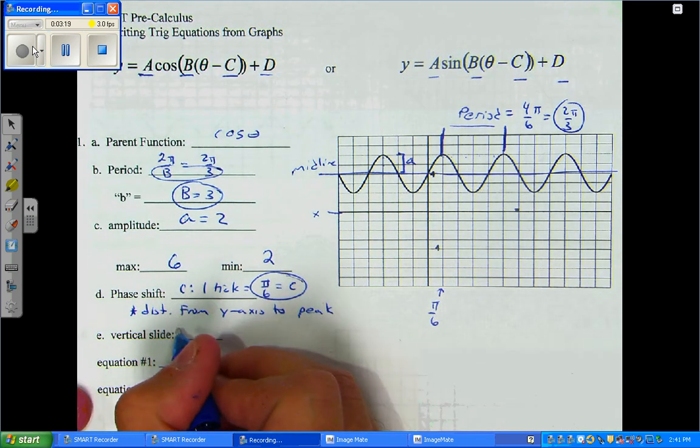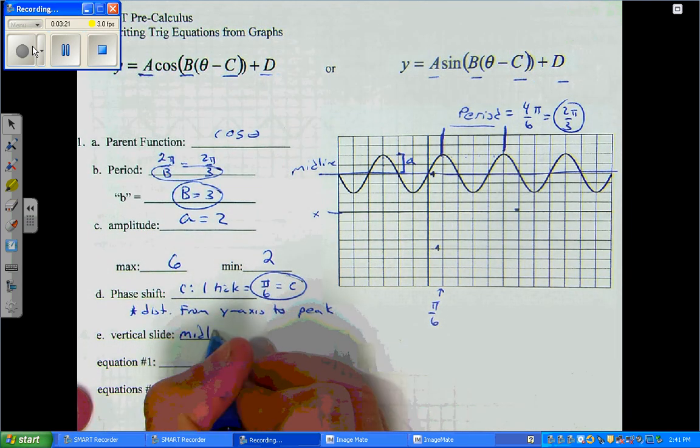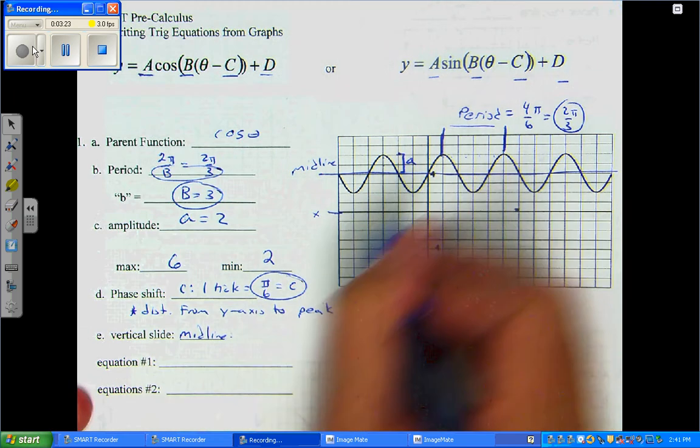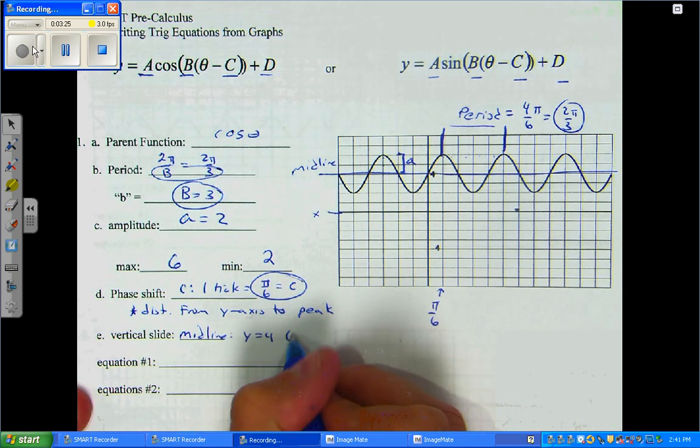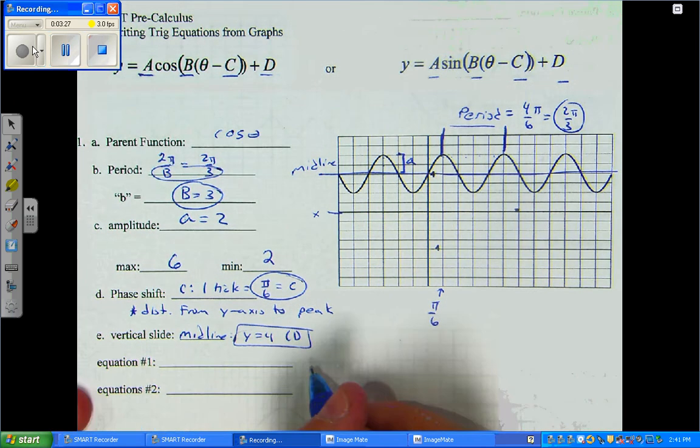The vertical slide, that's just the location of your midline. So, that's just y equals 4. And, it just so happens to be our d value. Easy breezy.